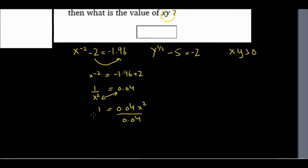And now I can divide both sides by 0.04. And this 0.04 will cancel this 0.04. I'll only have x squared by itself.